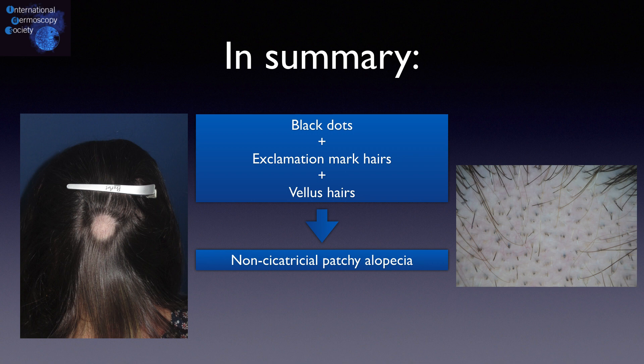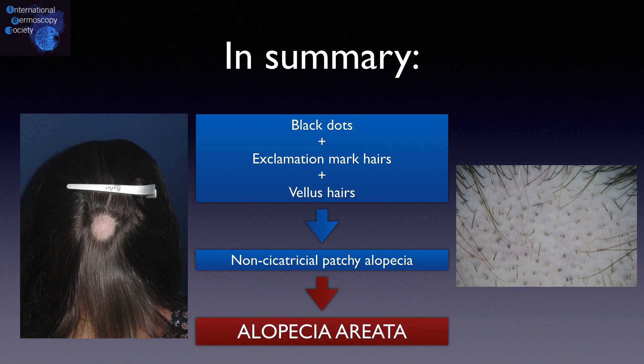In summary, the presence of many black dots, exclamation mark hairs, and vellous hairs in a patch alopecia is very suggestive of alopecia areata.